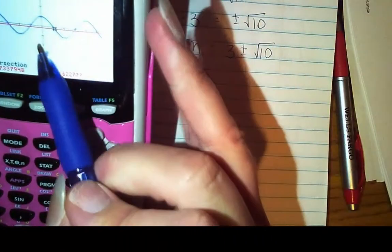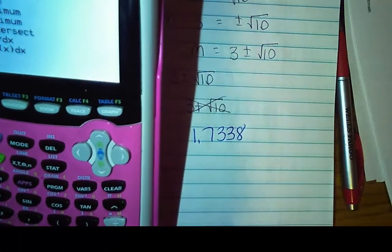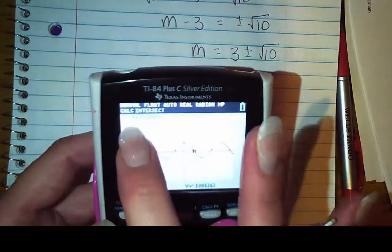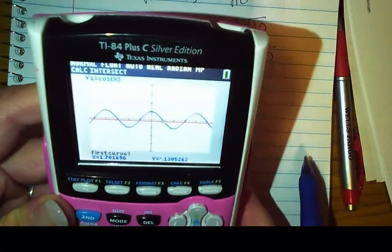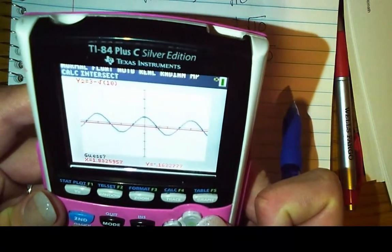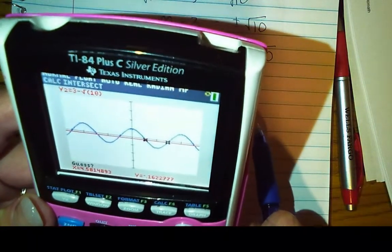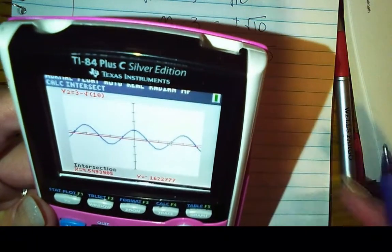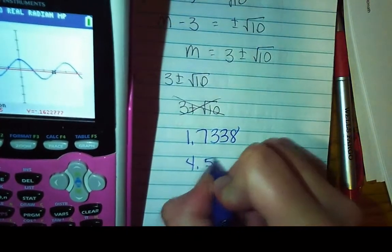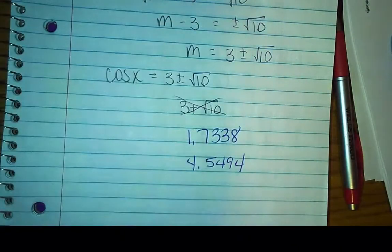All right, so now we've got to do it again because I found this one. Well, now I've got to find this one. So do second calc or second trace to get you to the calc. Hit 5 for intersect. It's going to do y1 for cosine again. So just hit enter. y2 for the radian measure. So hit enter again, and this time I want to get over to this other intersection point. So get as close as you can. Hit enter, and it thinks. So I've got 4.5494. So 4.5494. And those are going to be the two values that will make this thing work.